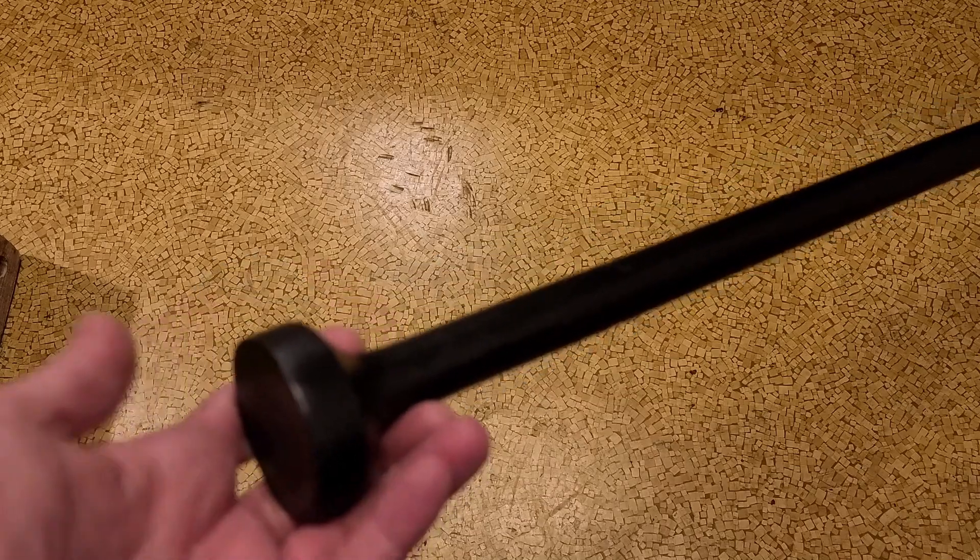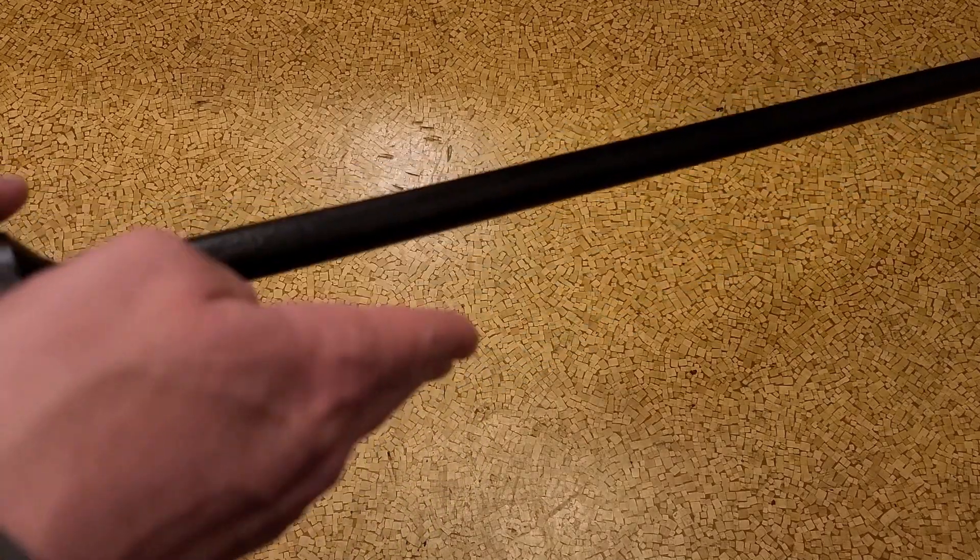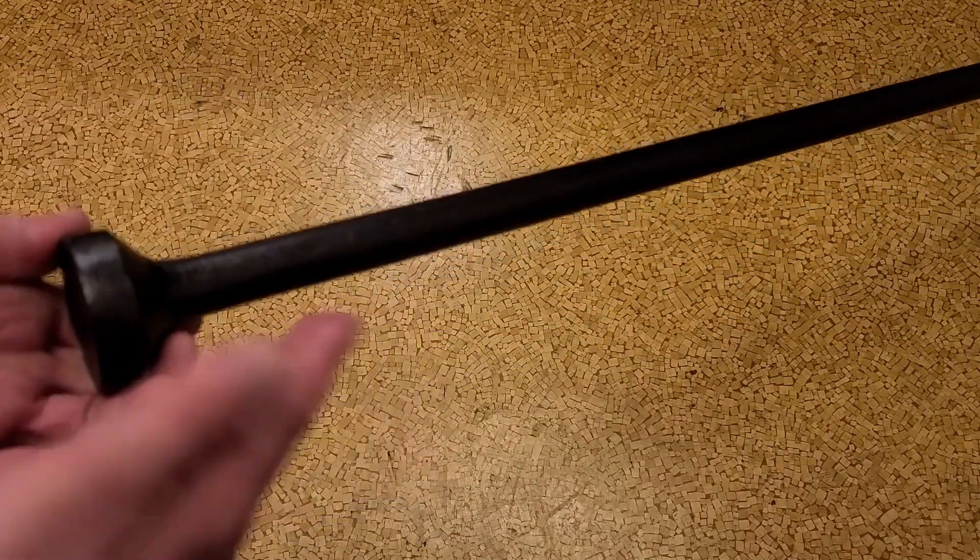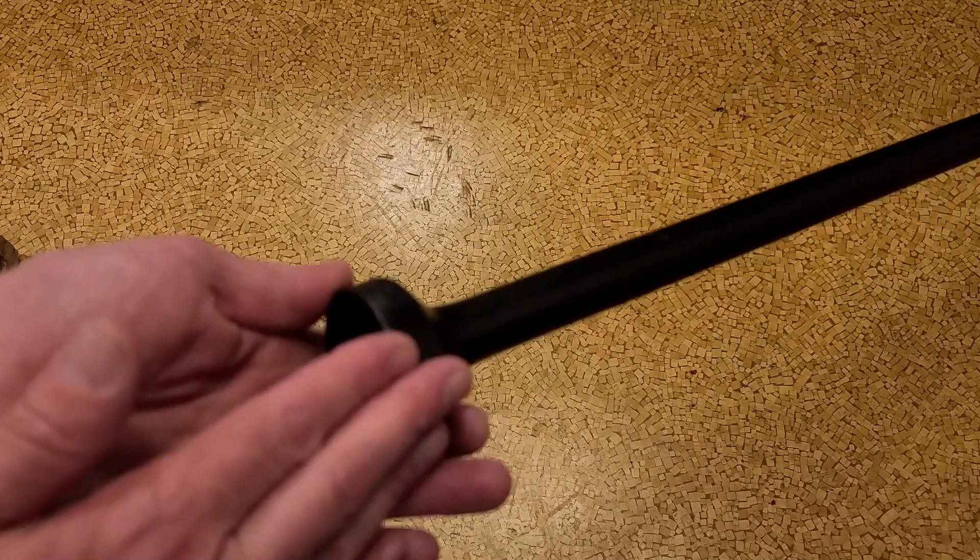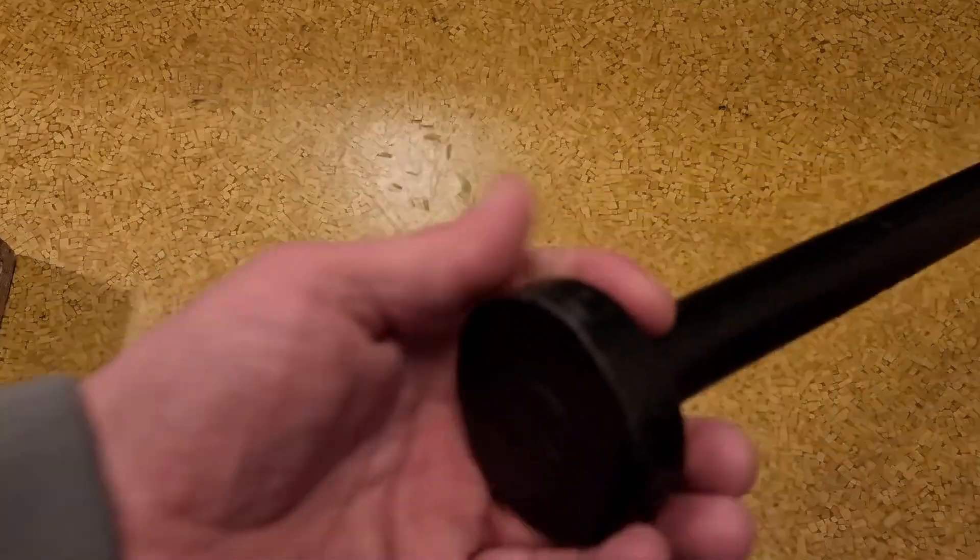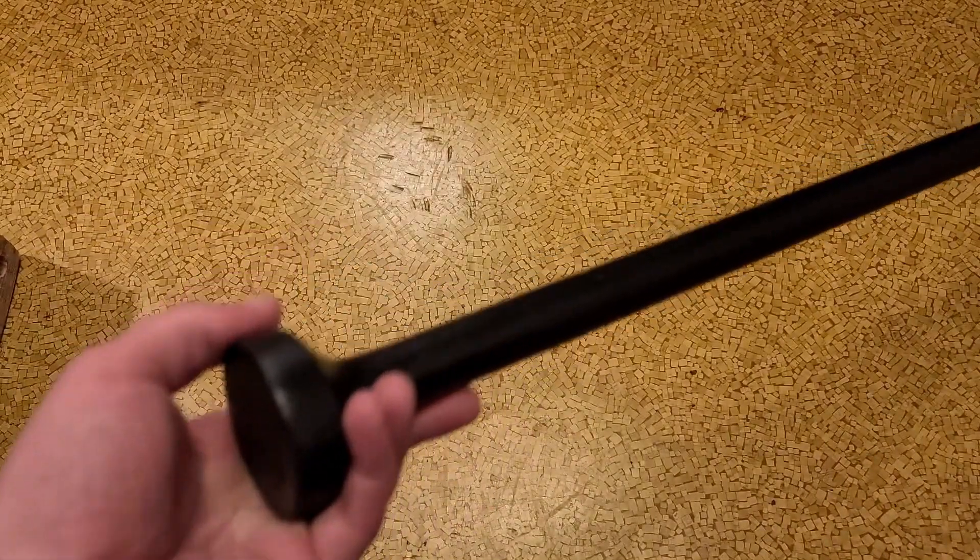If we go to the other side here, we can see that it has a tamping edge. So the idea of this was after you've squared up the hole for the fence post, you'll dump some gravel in the back of it. And then you'll actually use this to compress that gravel. It's just a flat end.